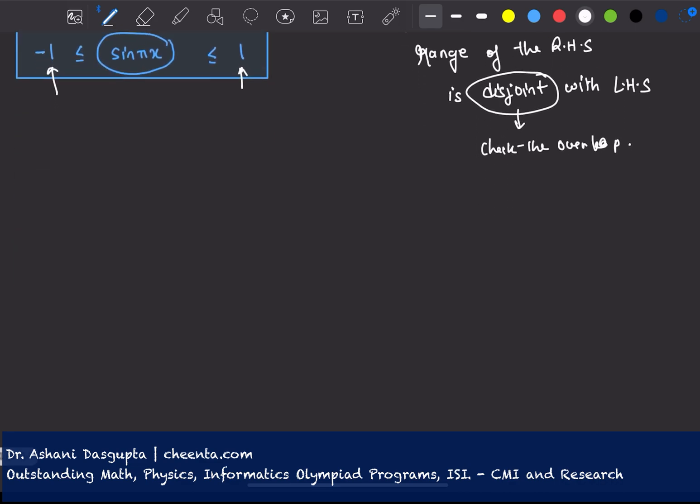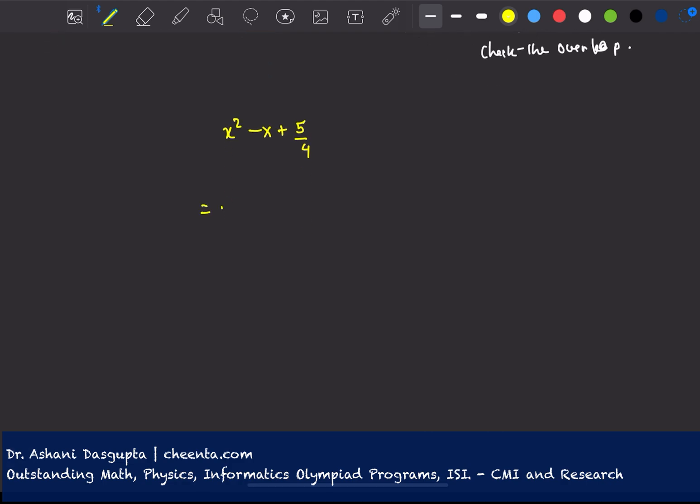So x square minus x plus 5 over 4. If I simplify this, this becomes x square minus 2 times half x plus half square plus 1. So I just wrote the 5 over 4 as 1 fourth plus 1. So this becomes x minus half whole square plus 1.